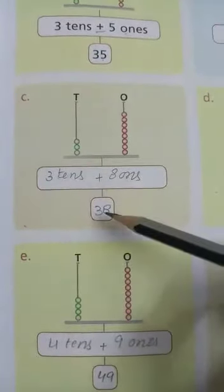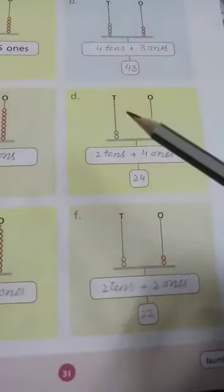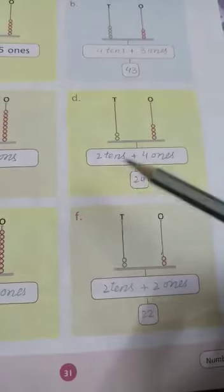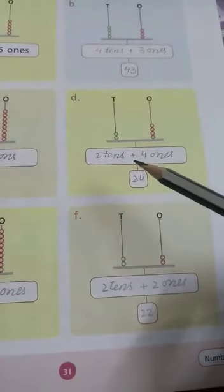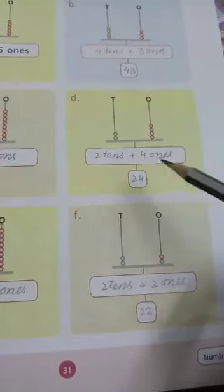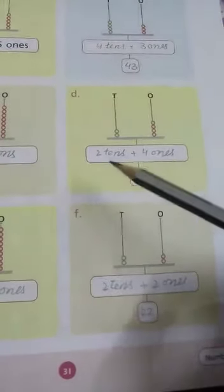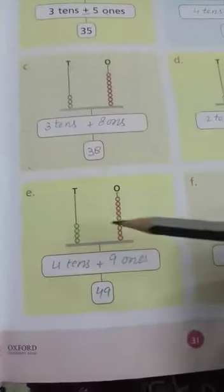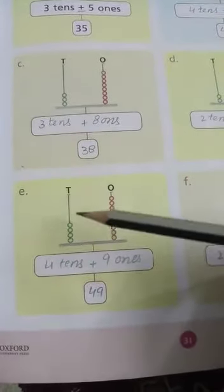Write the tenths here, the plus sign, and the ones — four ones — and it becomes 24. Write 24 here.